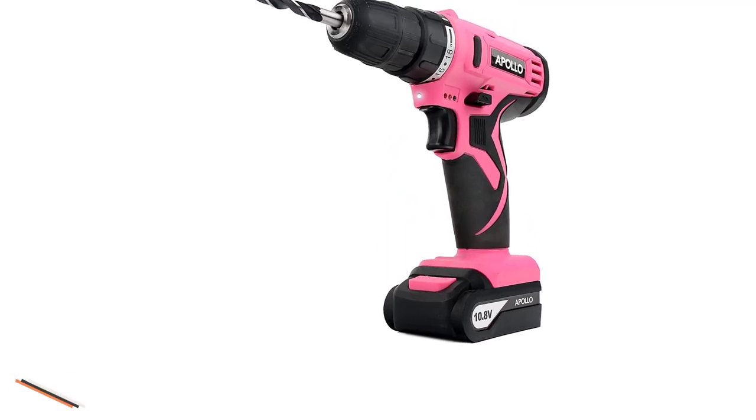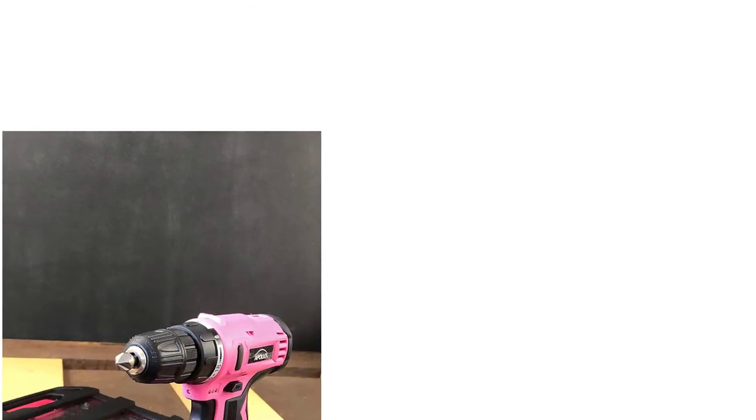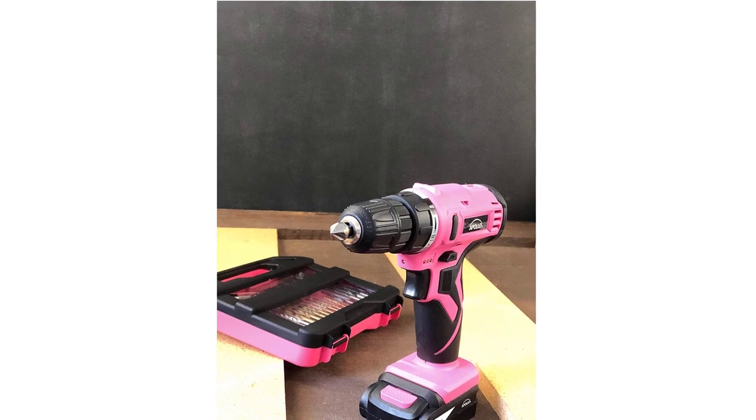It can also provide for a 2-speed operation with a low-speed high torque ranging from 0-400 RPM and a higher speed range operating from 0-1500 RPM. What is really interesting about this lightweight drill is that you can reach the maximum torque whilst operating at the low-speed option.